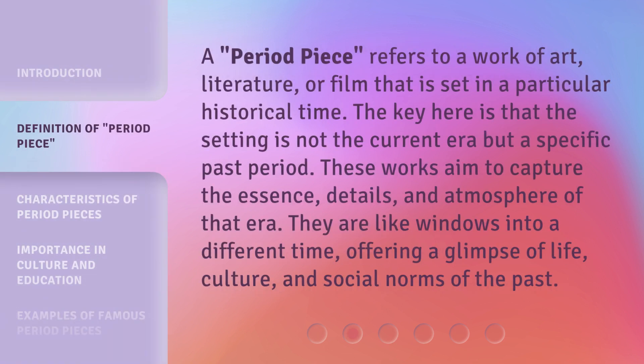A period piece refers to a work of art, literature, or film that is set in a particular historical time. The key here is that the setting is not the current era, but a specific past period. These works aim to capture the essence, details, and atmosphere of that era. They are like windows into a different time, offering a glimpse of life, culture, and social norms of the past.